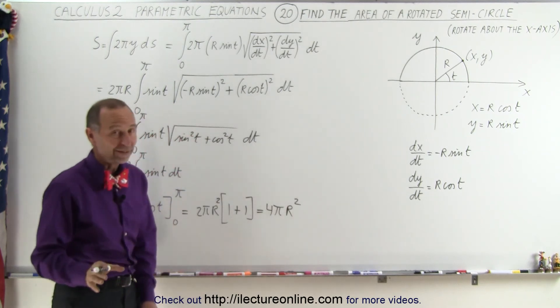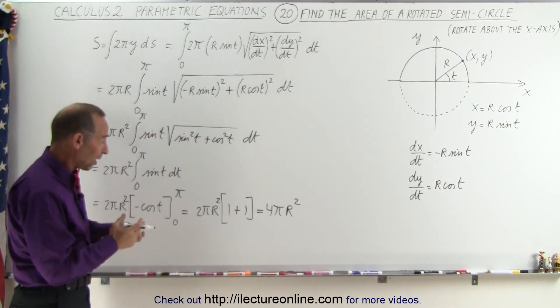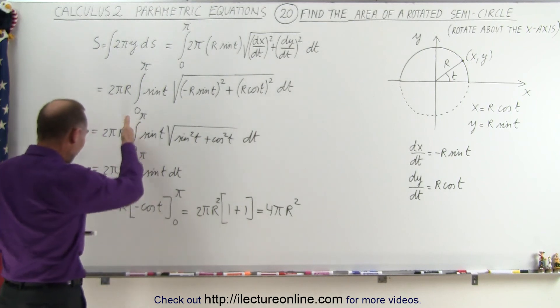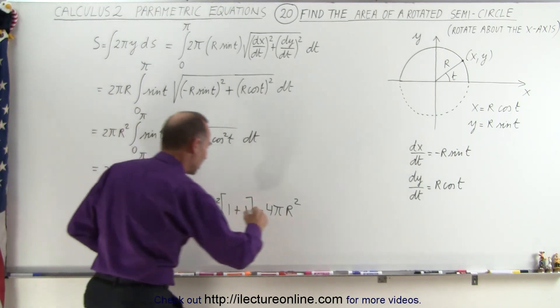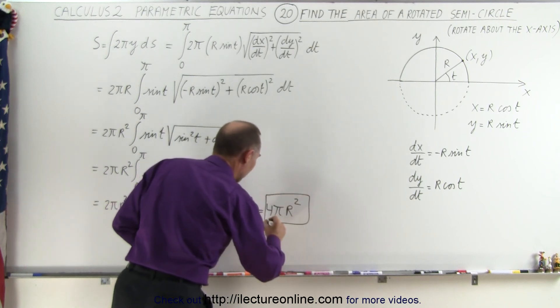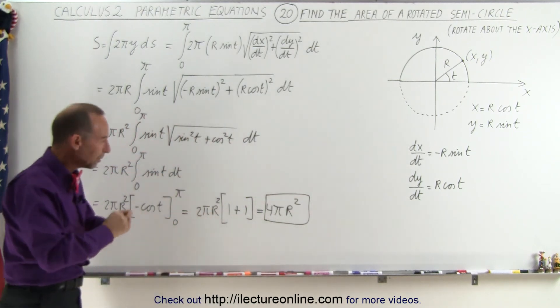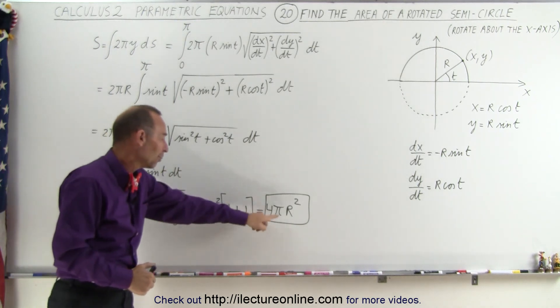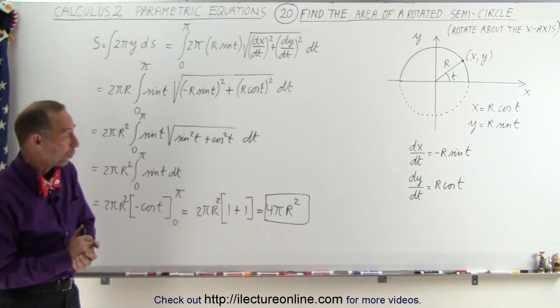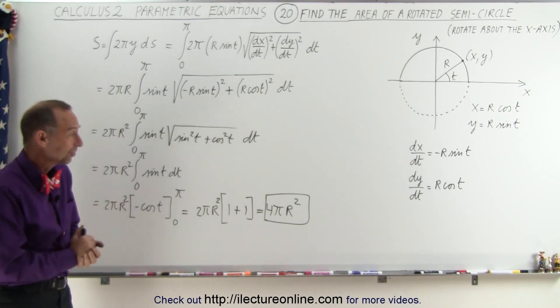Of course at the end I realize, since I'm looking for area, I need a square on top of the r. And of course I forgot to carry it through. But now that we've got the right answer, that would be the surface area of a semicircle rotated about the x-axis, which of course would be the surface area of a sphere. And by now most of us know that is indeed equal to 4πr². And that's how that's done.